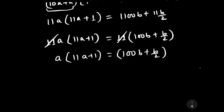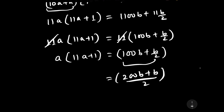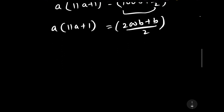Now let us add these two numbers. Taking LCM, it will equal to 200b plus b divided by 2, which is equal to a into 11a plus 1.